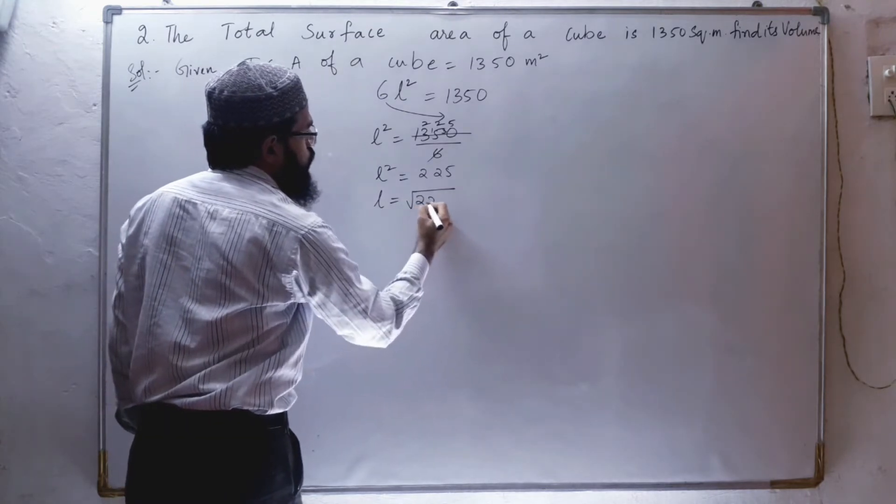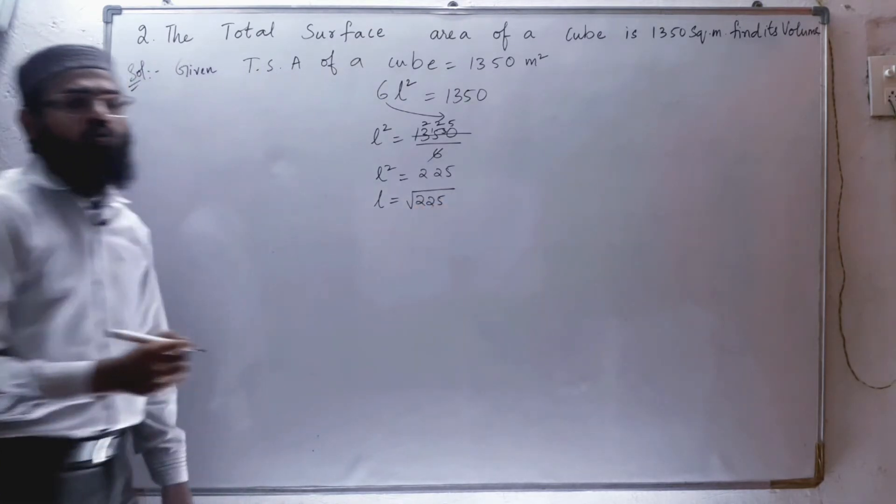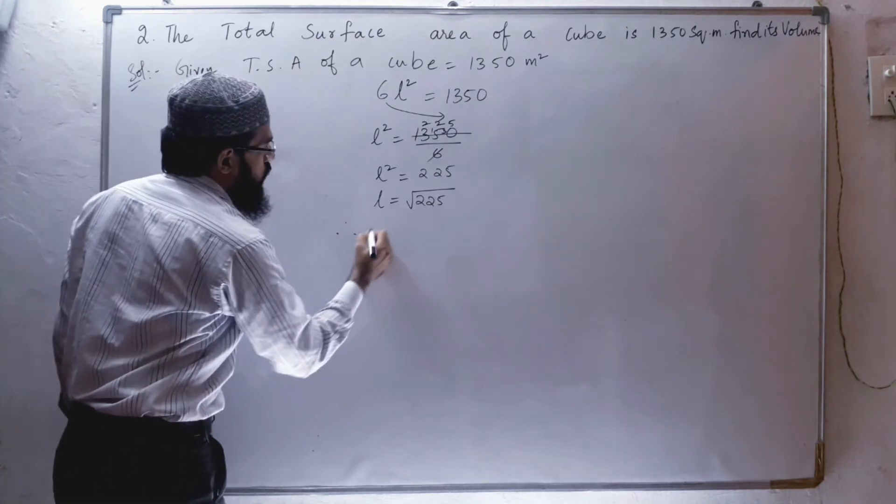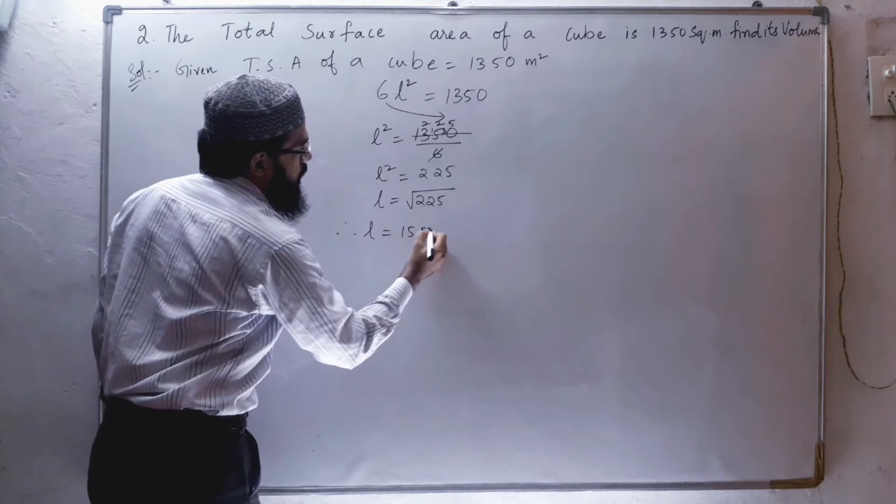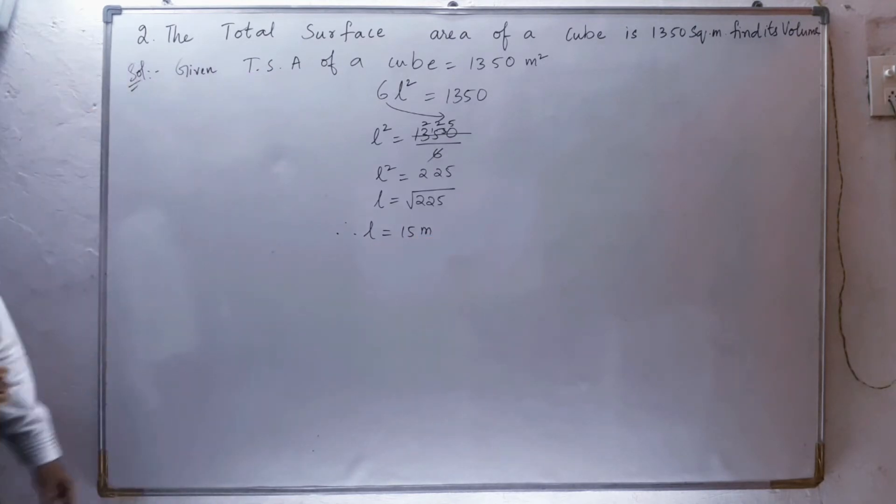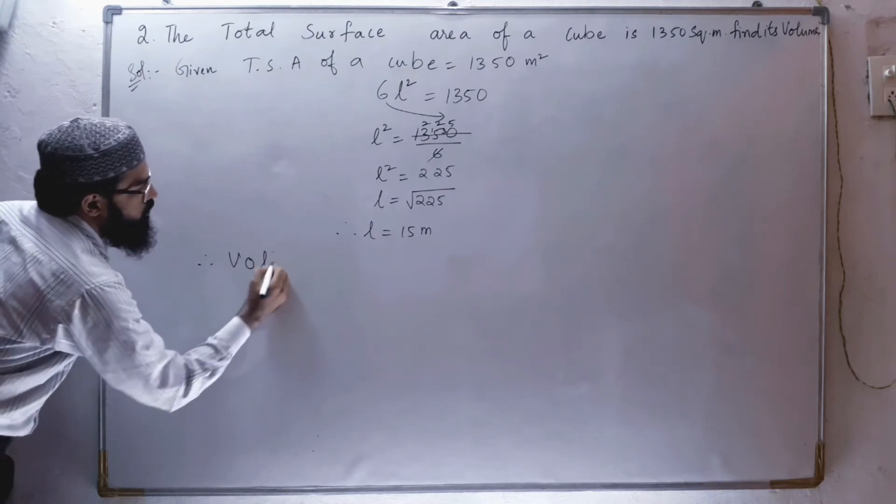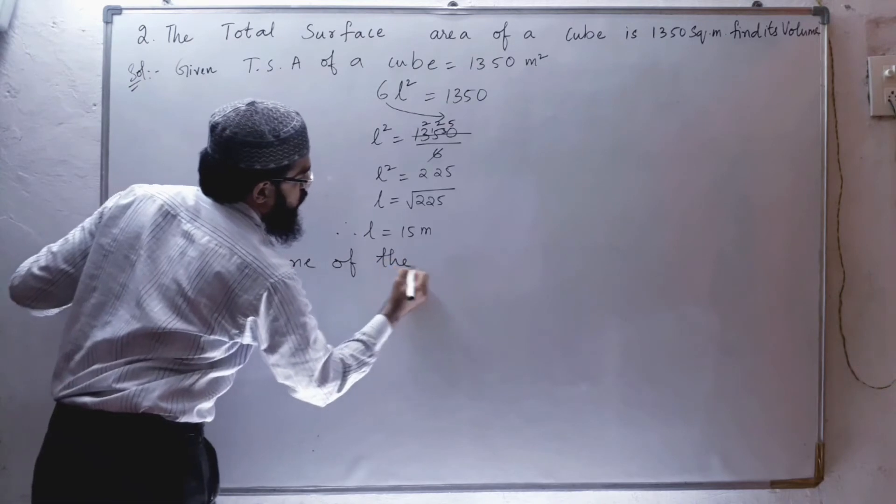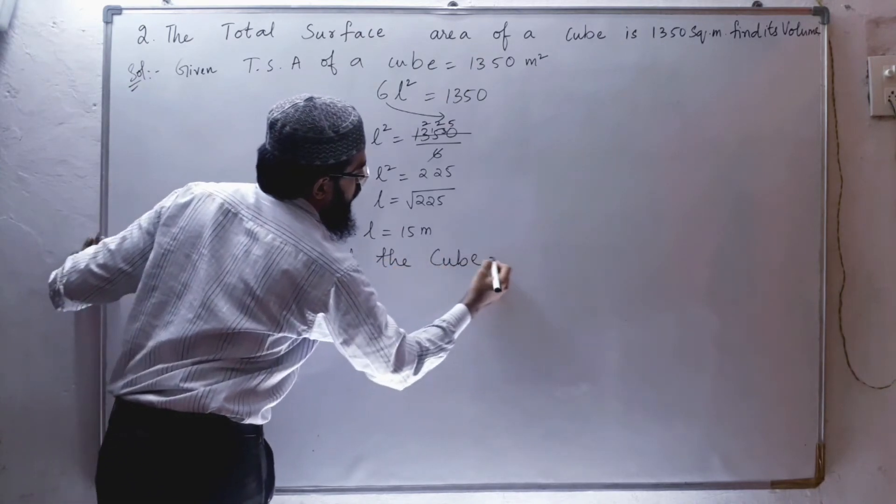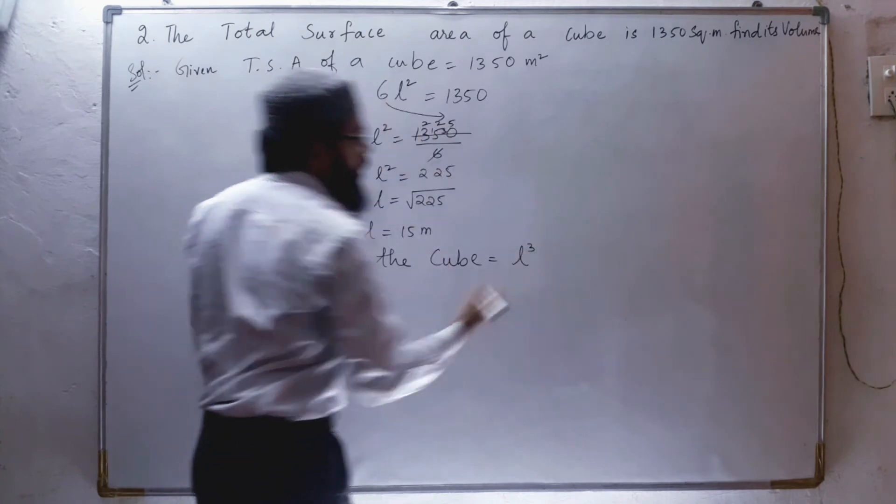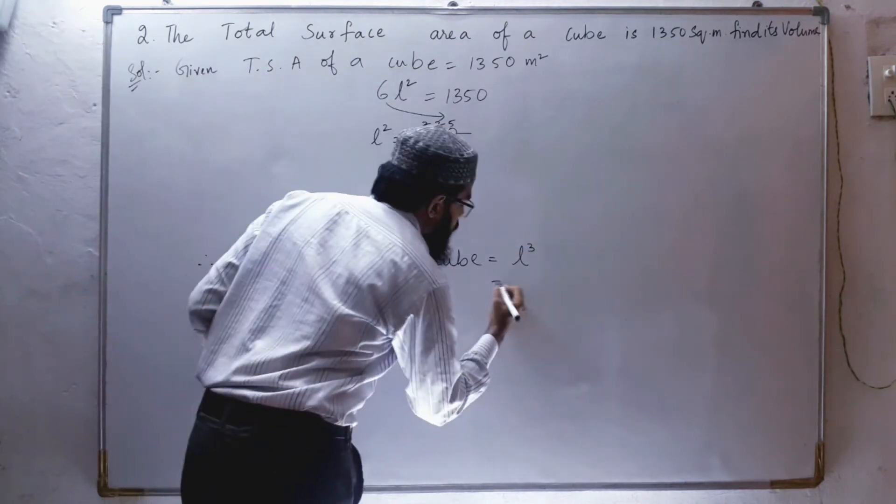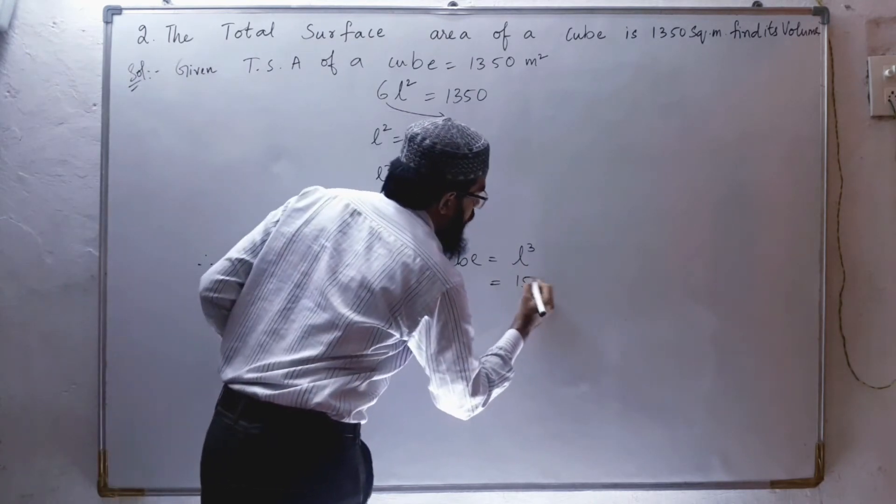So l equals square root of 225. Square root of 225 is 15, so therefore the value of l is 15 meters. Next, we have to find the volume of the cube. Therefore, volume of the cube equals l³ or a³, whatever variable you use.